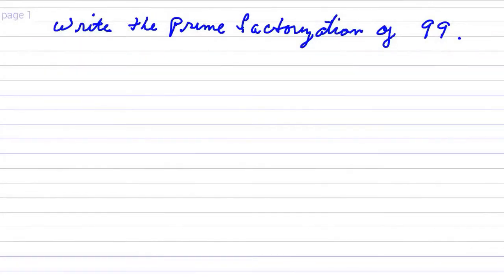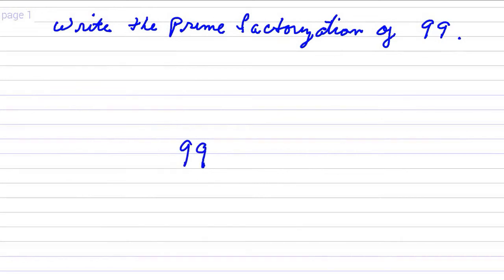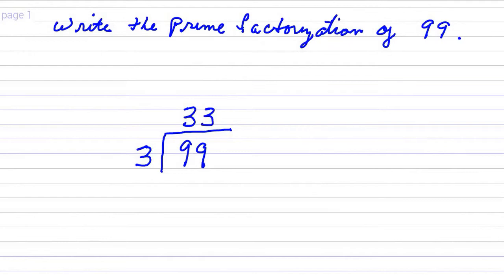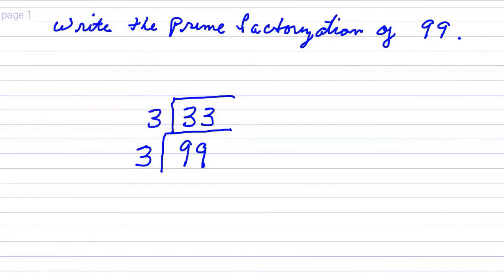So the way you want to start this out: 99 is not evenly divisible by 2, so you go to the next number, which is 3. 99 divided by 3 is 33. Is it divisible by 3 again? Yeah, okay — 33 divided by 3 is 11.